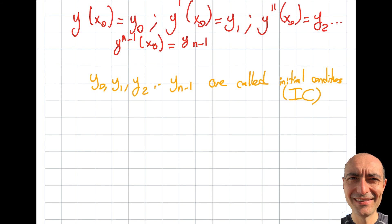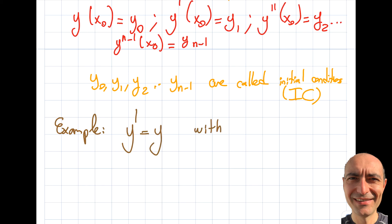Before talking about boundary value problems, let's solve a fairly simple example. I'm limited by what I can solve since I haven't shown you how to solve differential equations yet. Let's say y' = y, with the boundary condition y(1) = −5. Let's go ahead and solve this — it's more undergraduate level but will do just fine.